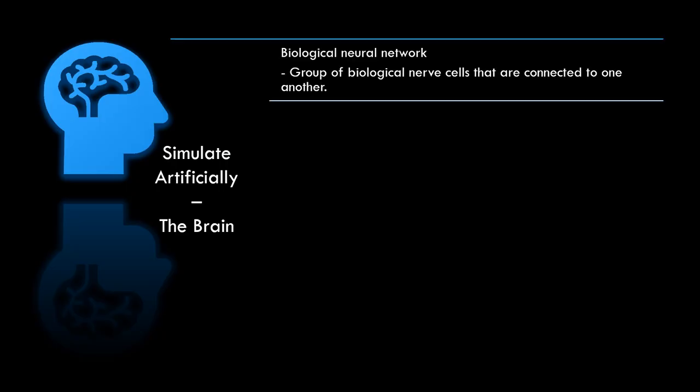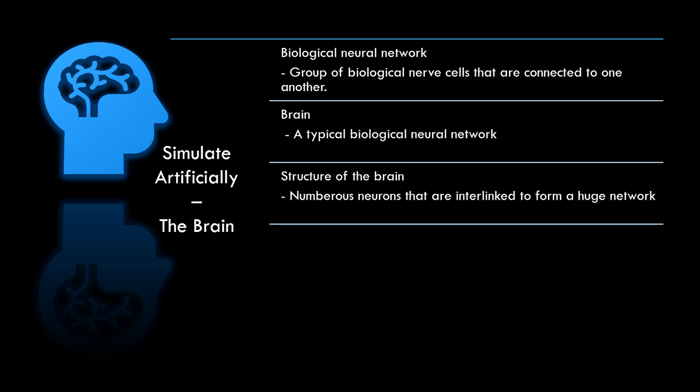The Biological Neural Network refers to a group of biological nerve cells that are connected to one another. A typical Biological Neural Network is the brain. The brain is composed of a number of neurons that are interlinked to form a huge network. This network is used to transmit information between any two points.